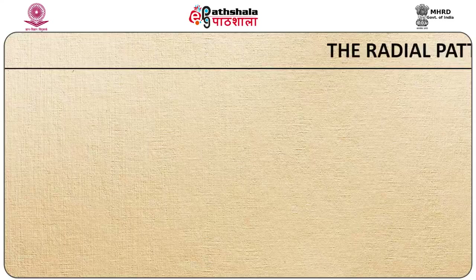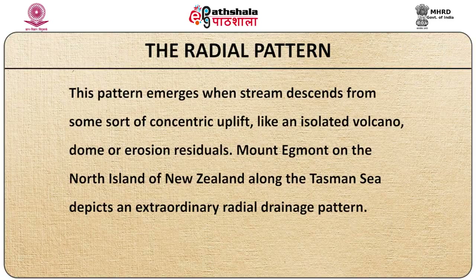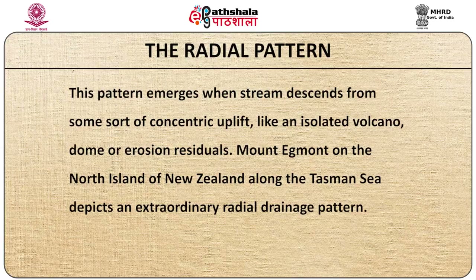Let us understand the radial pattern. This pattern emerges when a stream descends from some sort of concentric uplift like an isolated volcano, dome or erosional residuals. Mount Egmont on the North Island of New Zealand along the Tasman Sea depicts an extraordinary radial pattern. A complex of radial patterns in a volcanic field is referred to as multiradial. Streams on craters, calderas and other depressions may exhibit this pattern. The modified basic pattern is centripetal.